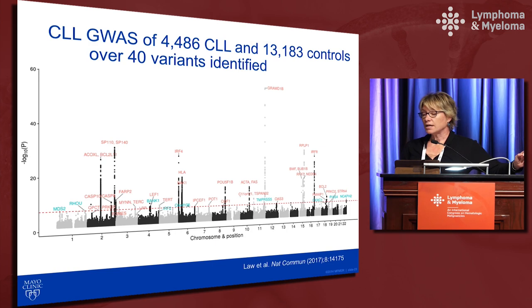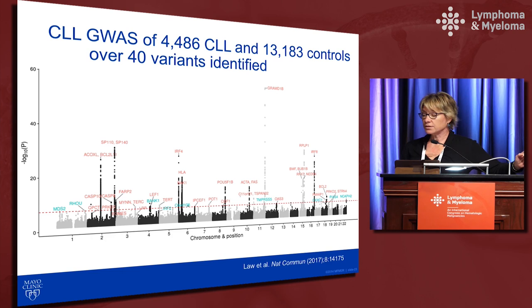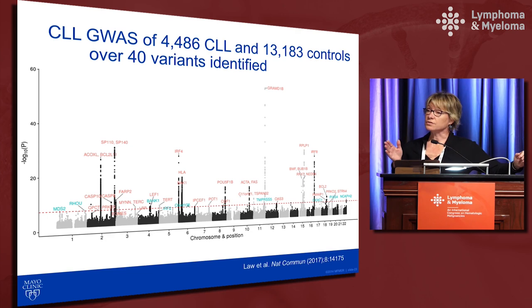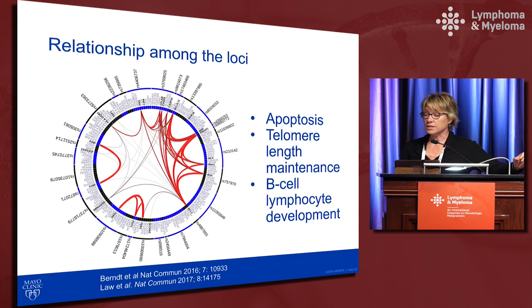In that study, new regions (shown in blue) were identified and previously reported regions (in red) were validated. Over 40 variants have been identified to date across all CLL GWAS studies. The variants are listed by nearest gene, but most are in non-coding regions — an active area of research. These variants correlate with apoptotic pathways, telomere length maintenance pathways, and B-cell lymphocyte development — biologically plausible pathways for increasing CLL risk.